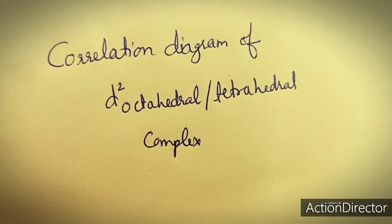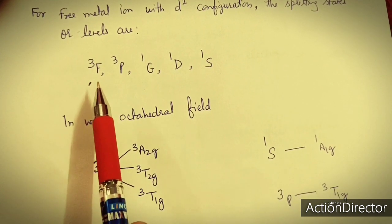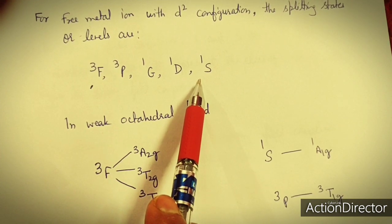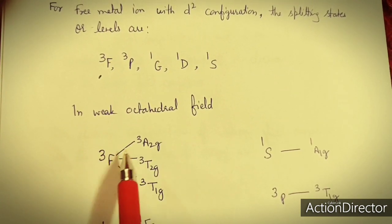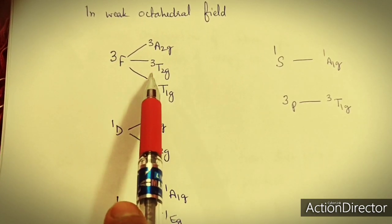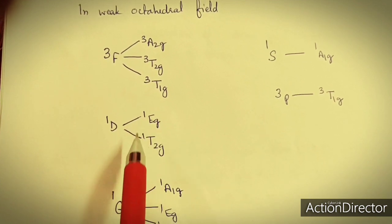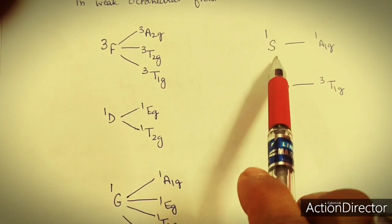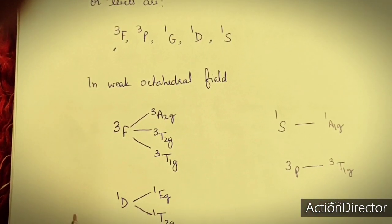For D² configuration the free metal ion splitting states are 3F, 3P, 1G, 1D, and 1S. When these free metal ion terms form octahedral complexes in weak field, they further split into their Mulliken terms. 3F splits into 3T1G, 3T2G, and 3A2G. 1D splits into T2G and EG. 1G splits into T1G, T2G, EG, and A1G. The Mulliken term of 1S is 1A1G, while that of 3P is 3T1G.